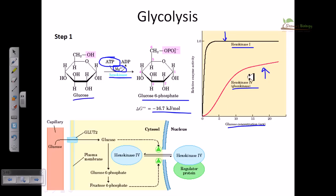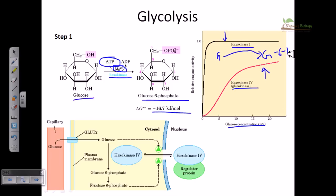Hexokinase I is present inside the cytoplasm of the cell at all times and continuously converts glucose into glucose-6-phosphate. Hexokinase IV, however, is not always active — it can sense the situation, determine what needs to be done, and then take action.